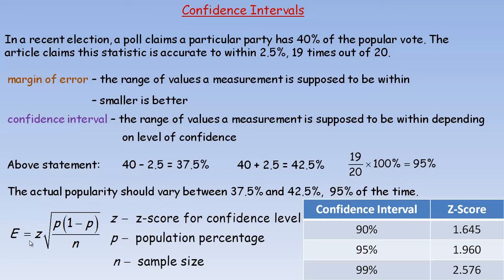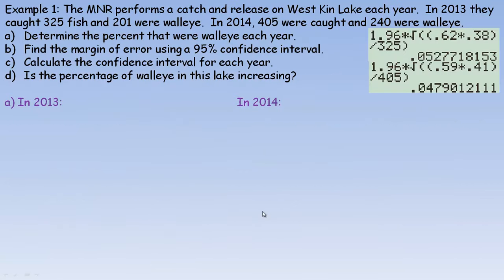Now we're going to use this formula on the next couple of pages to calculate some confidence intervals. The error e is the z-score times the square root of p times (1 minus p) over n. So z is the z-score for the confidence level, whether it's 90%, 95%, or 99%. p is the population percentage, and n is the sample size, and we'll get into that on examples on this page and the next.